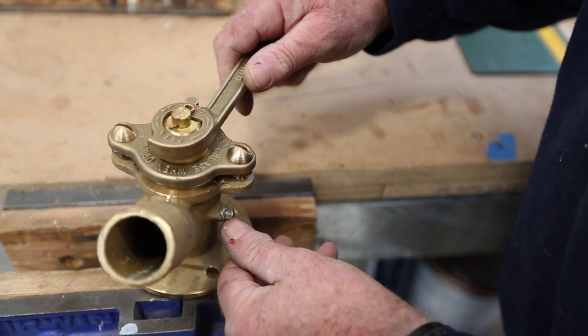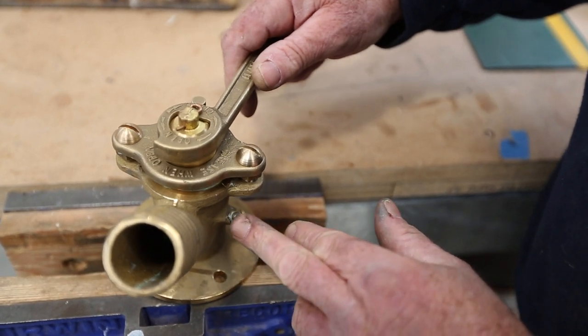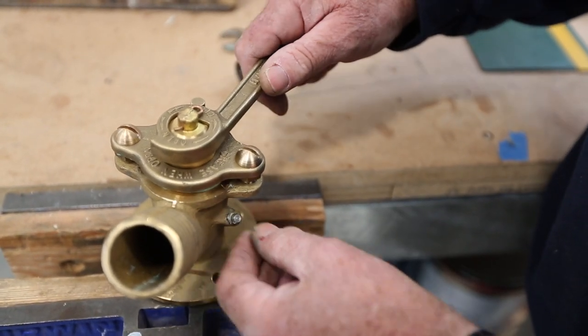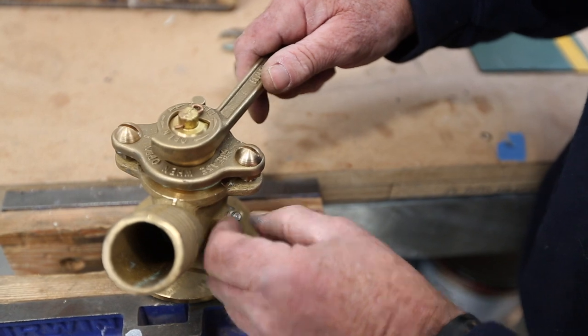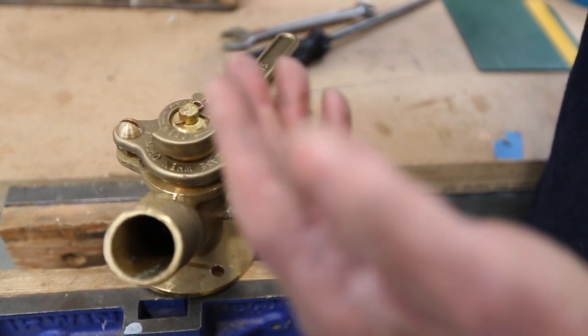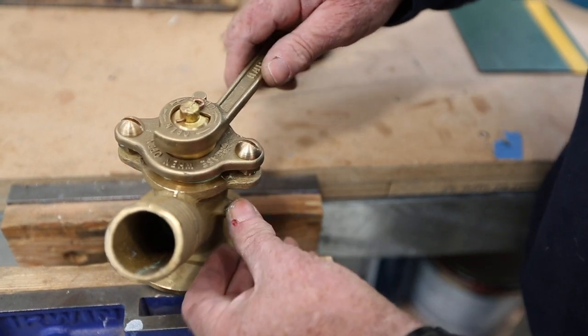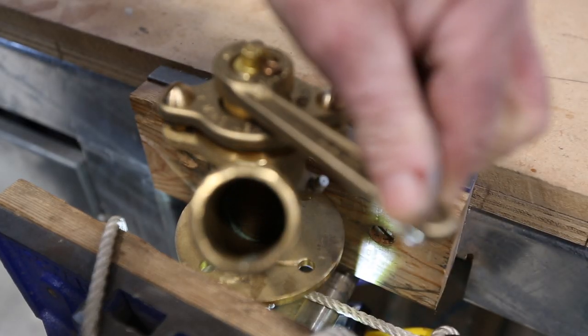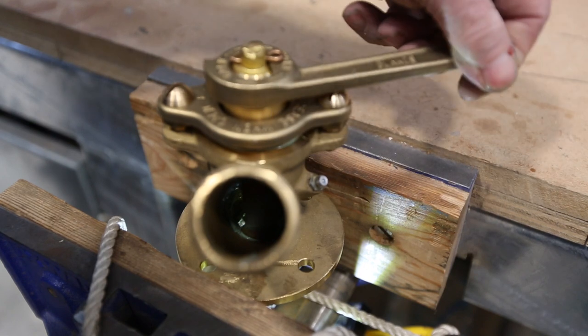Also, on the modern Blake Seacocks, you see they've got a grease nipple on the side. If this is done at least once a year, you only need to grease this up and work the cone backwards and forwards to work the new grease in.